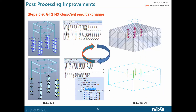Looking at steps 5 to 9 in detail: we have the Midas Gen structure with reactions that can be exported to Midas GTS. After modeling in GTS-NX — for example, creating interfaces for piles represented by beam elements — we run the analysis and obtain displacements. Those displacements can be exported as a force-displacement function, since force was our input for Midas GTS-NX. These relationships can then be imported directly back to Midas Gen as a new feature in Midas GTS-NX.